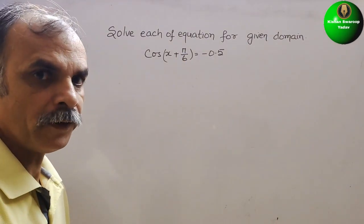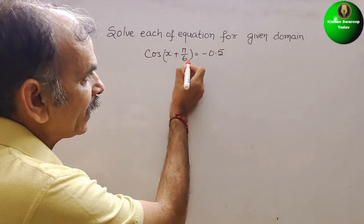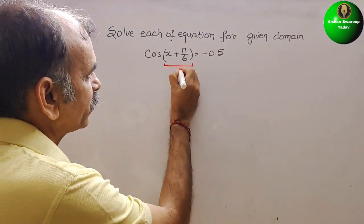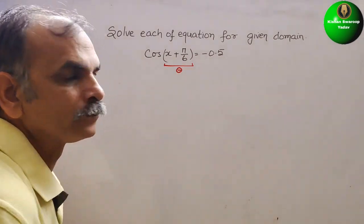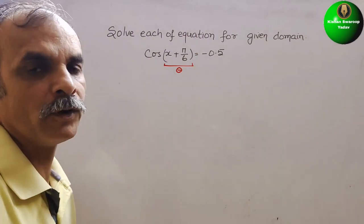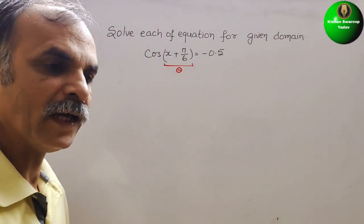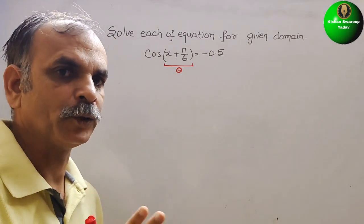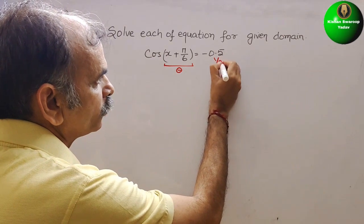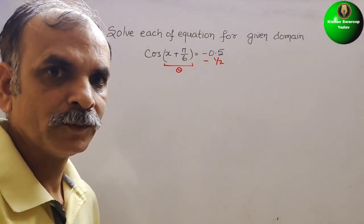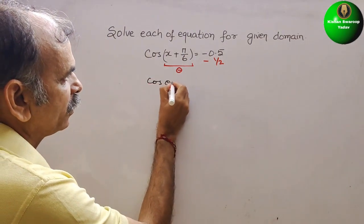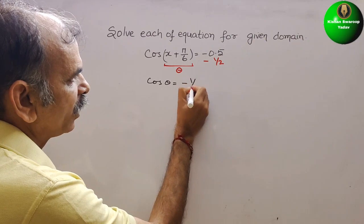First, what we have to take is whatever is in the bracket, we will take it as theta. So this is your theta. Now you will get cos θ = -0.5. 0.5 is 1/2, so this is nothing but 1/2. So we will get -1/2. Now we get our equation as cos θ = -1/2.